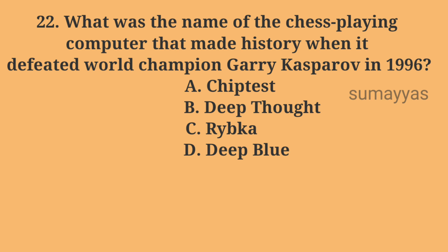What was the name of the chess-playing computer that made history when it defeated world champion Garry Kasparov in 1996? Option A: Chip Test. Option B: Deep Thought. Option C: Ritka. Option D: Deep Blue. The answer is Option D: Deep Blue.